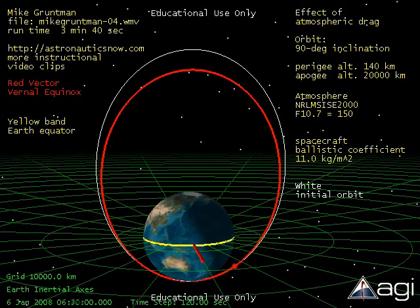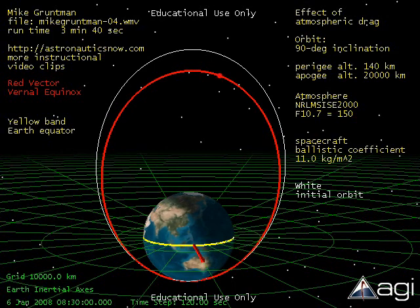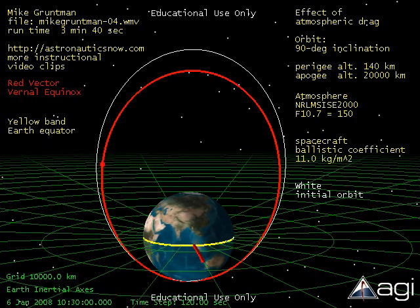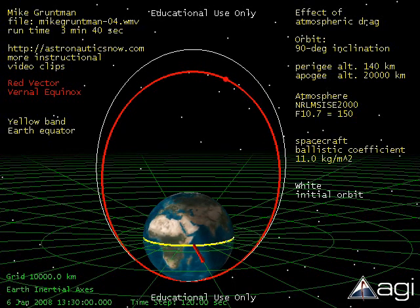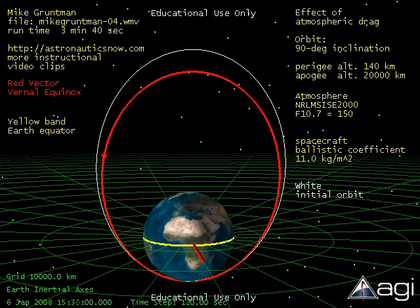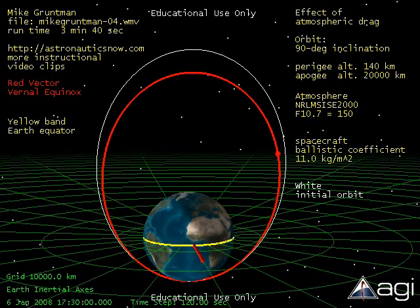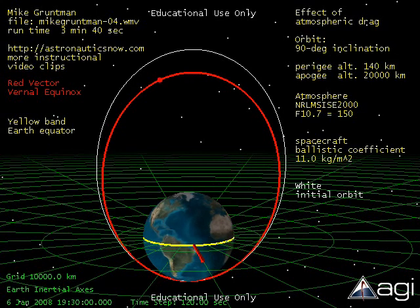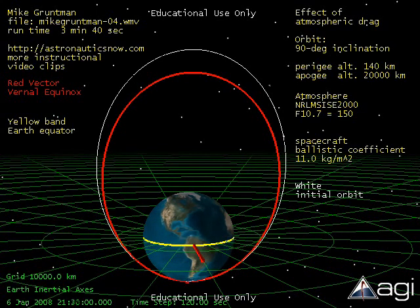In contrast, the satellite loses significant velocity due to drag during the perigee passage. This causes the orbit apogee to lower. Therefore, the net effect of atmospheric drag on the elliptical orbit is its circularization.